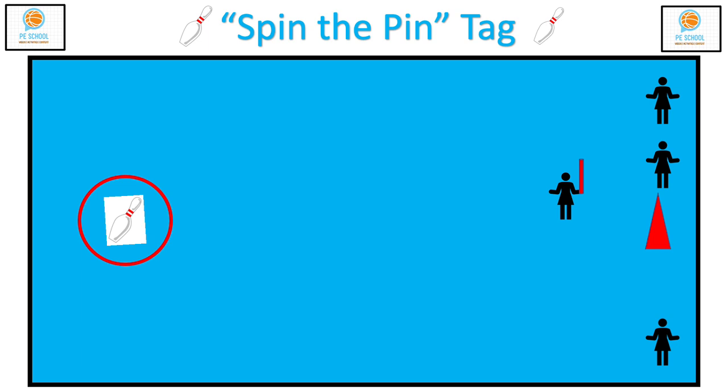It is up to you to decide what rules you would like to play if the tagger tags any of the students. But usually, I just have the students do an exercise such as jumping jacks or burpees, and then they can go down and play another round of the game.